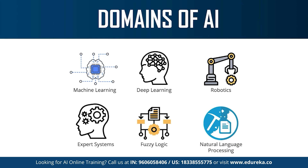Then we have expert systems. An expert system is an AI-based computer system that learns and reciprocates the decision-making ability of a human expert. Expert systems use if-then logic notions to solve complex problems and do not rely on conventional procedural programming. They are mainly used in information management and are seen in fraud detection, virus detection, and managing medical and hospital records. So these were the different branches of artificial intelligence.